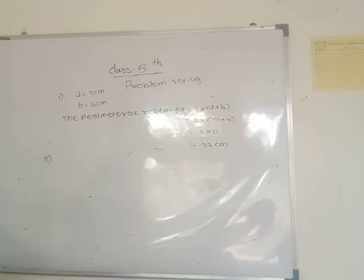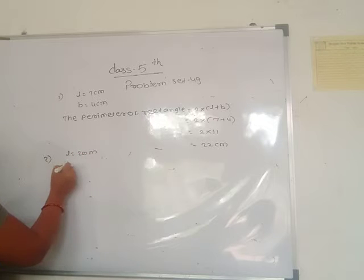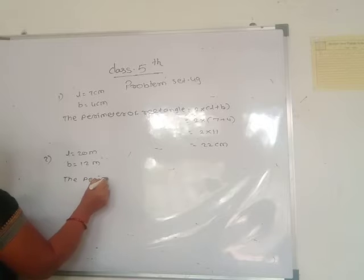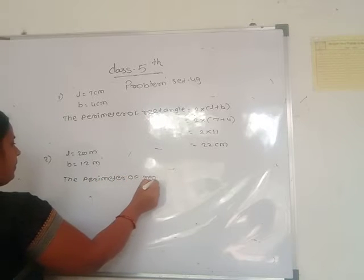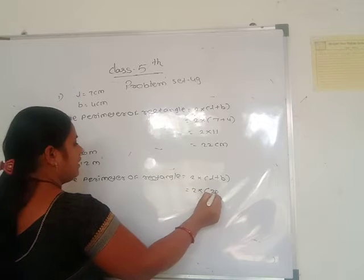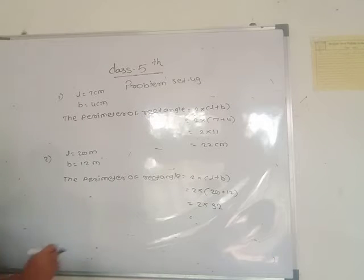Second example: If the length of a rectangle is 20 m and its width is 12 m, what is its perimeter? Here L = 20 m, B = 12 m. Perimeter of rectangle = 2 × (L + B) = 2 × (20 + 12) = 2 × 32 = 64 meter. The perimeter of the rectangle is equal to 64 meter.